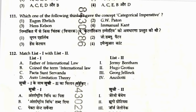Question 111: Which thinker gave the concept of categorical imperative? That was Immanuel Kant. Answer is 4.